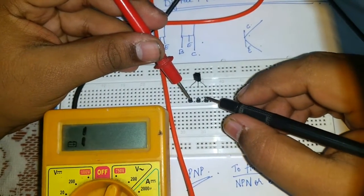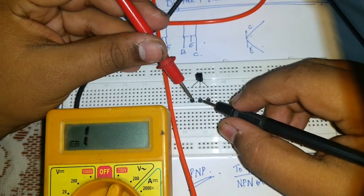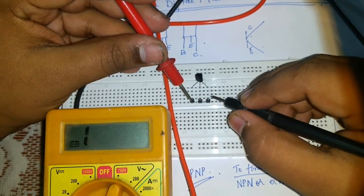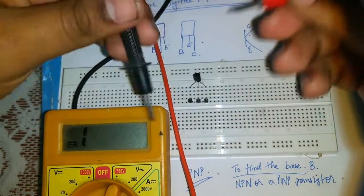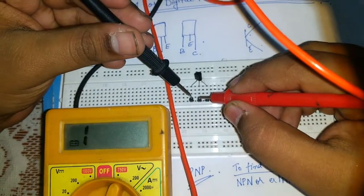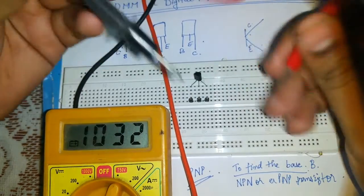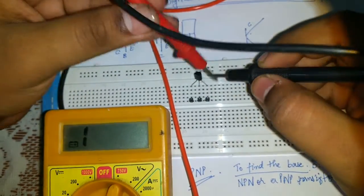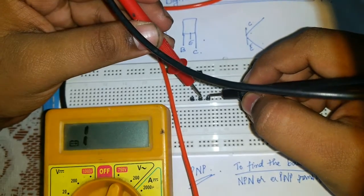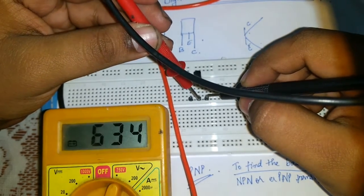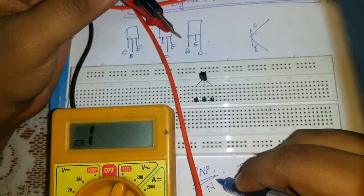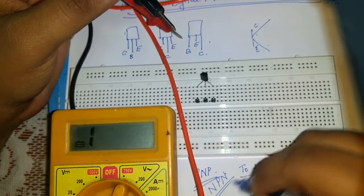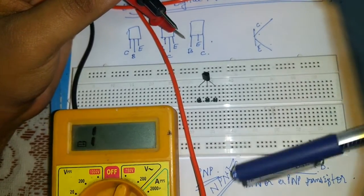Keeping red pin in first one, I am not getting anything. Not getting anything. Keeping red pin in second one, I got a deflection. Keeping black pin in third, I got a deflection. That means it is a NPN transistor.